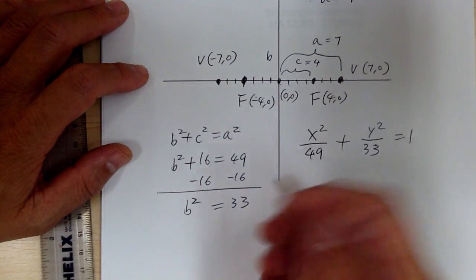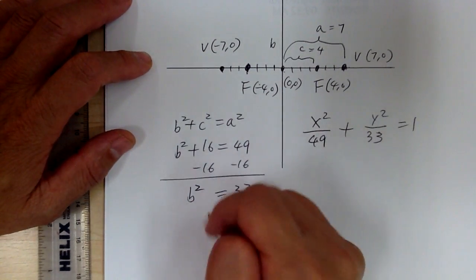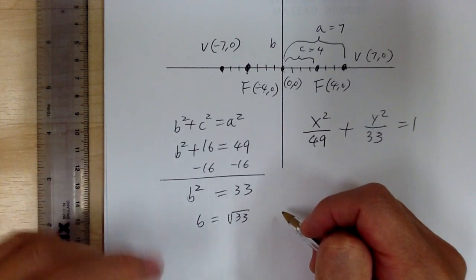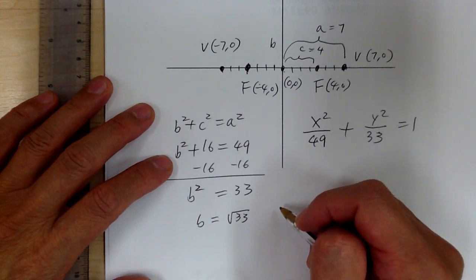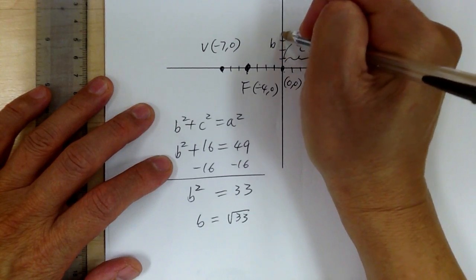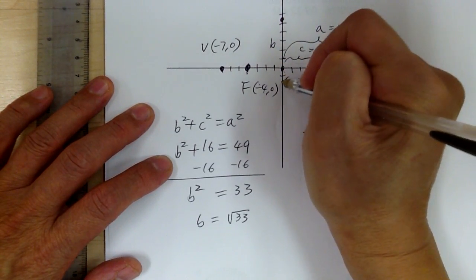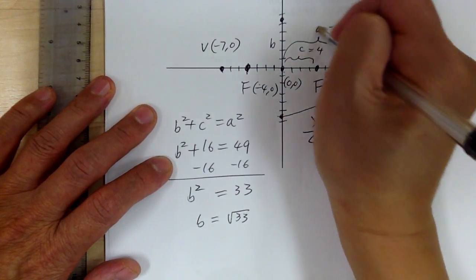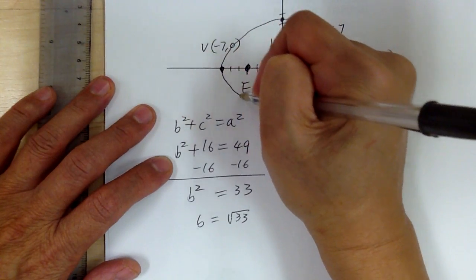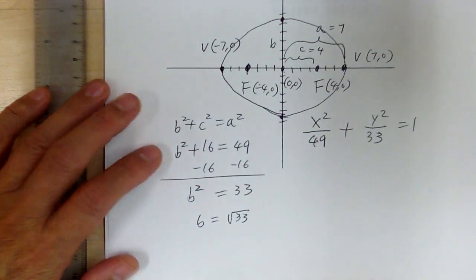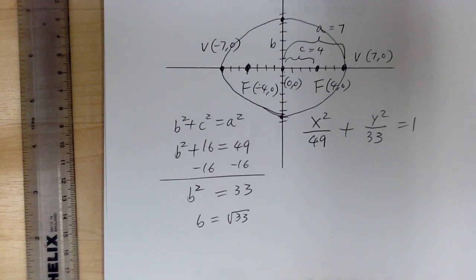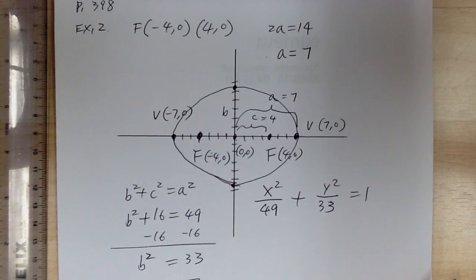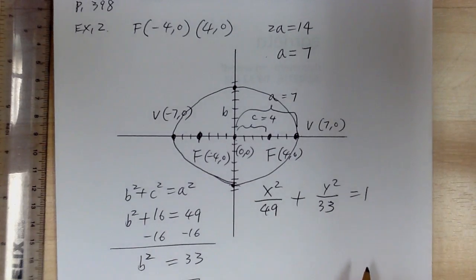If you need to graph, solve for b: b equals square root of 33, which is roughly 5.5. So you go about 5.5 up and down from center to plot the minor axis endpoints, and your ellipse looks something like that. That's example two. Now let's go ahead and do some practice. Thank you.